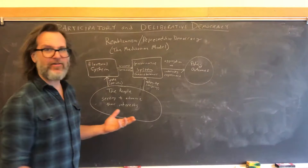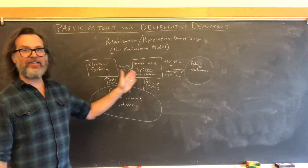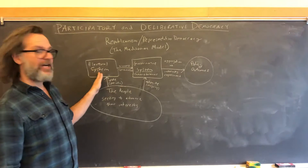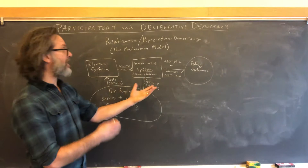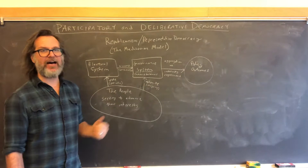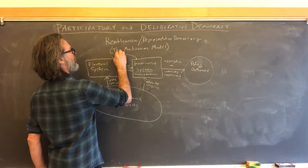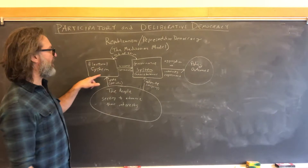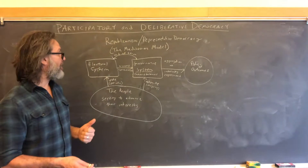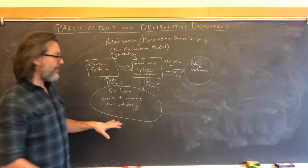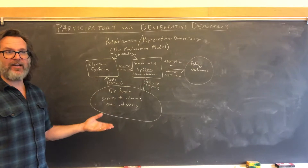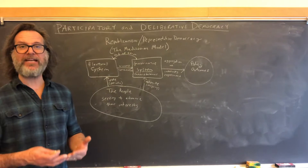In a standard Madisonian model, there is an electoral system and a system of governance. Elections happen, the winners become the representatives, and those representatives then aggregate the interests they represent to create policy outcomes within the confines of checks and balances. This is an ongoing, cyclical process — representatives reach the end of their term, and we cycle back and forth between the electoral system and the system of governance. The underlying assumption of the Madisonian model is that people want to advance their interests. It's an interest-based theory of politics.